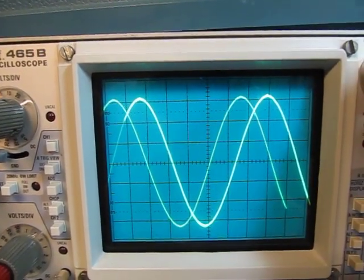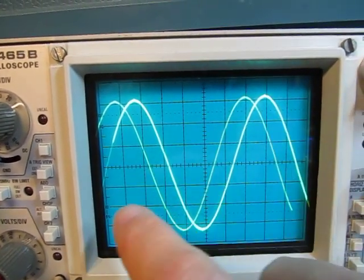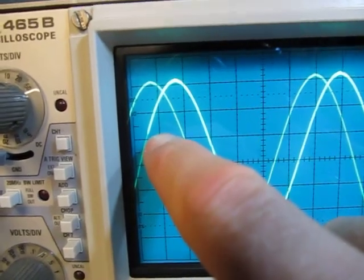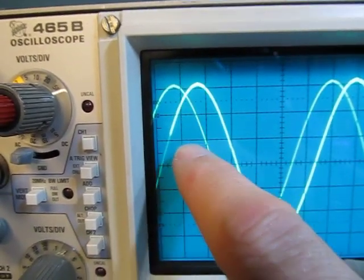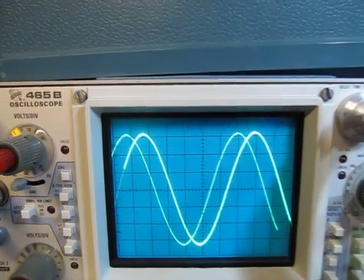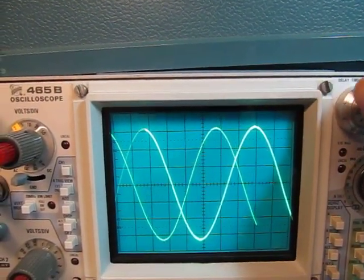Now you'll notice if I pull back here and I adjust the delay, you can actually see what's happening here. You can see that this trace is now getting intensified right here, and that's the part where the B trace is starting. So as I advance that delay by adjusting the delay knob here, you can see how we can walk that waveform right across.